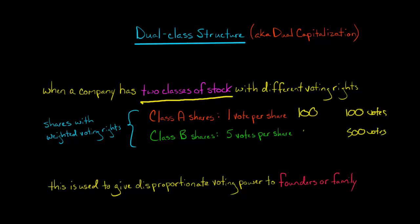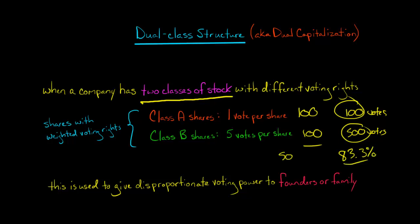Even though each shareholder has 100 shares, they each own 50% of the total number of shares. But in terms of total voting power, 500 divided by 600 means the Class B shareholder controls 83.3% of the voting power, even though they only control 50% of the total shares.